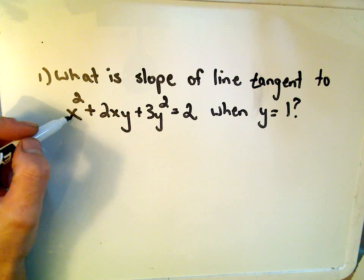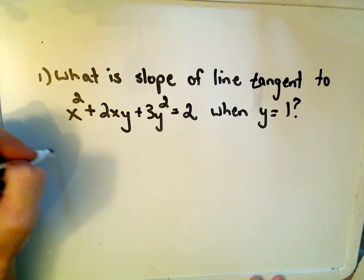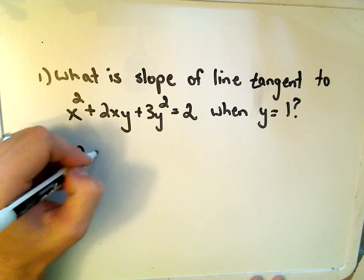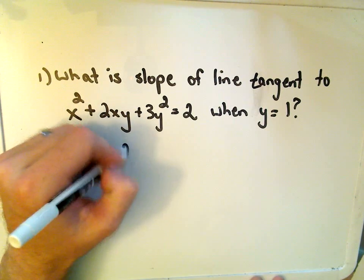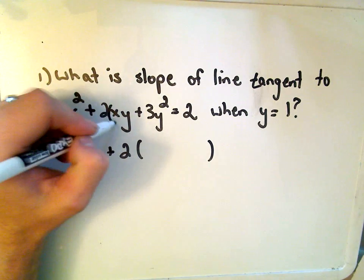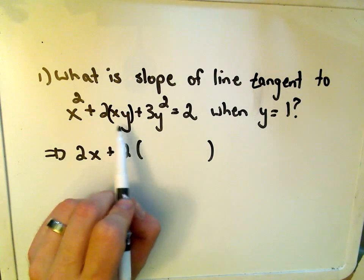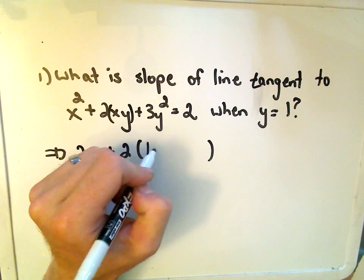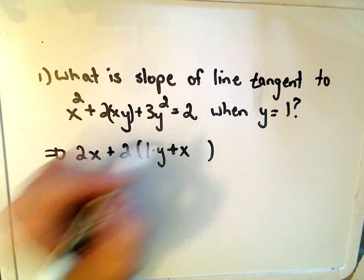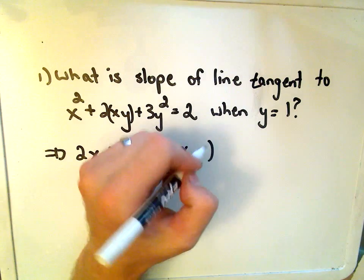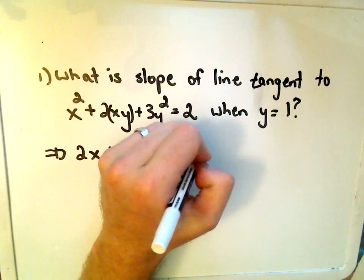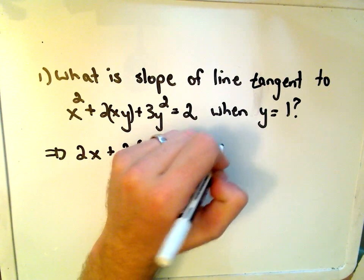Remember in this case that we're going to have to use implicit differentiation as well. So when we take the derivative, the derivative with respect to x of x squared will just be 2x. Then we'll have to use the product rule on the xy part, so maybe I'll put that in parentheses. So the derivative of x is 1, we'll leave the y alone plus, now we'll leave the x alone, and the derivative of y is dy/dx. I prefer the dy/dx notation myself.